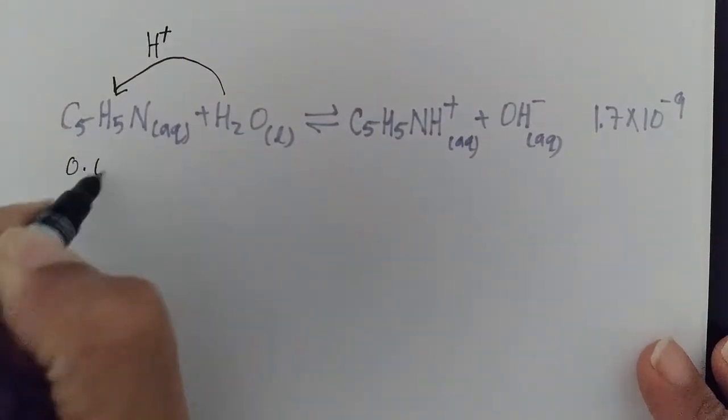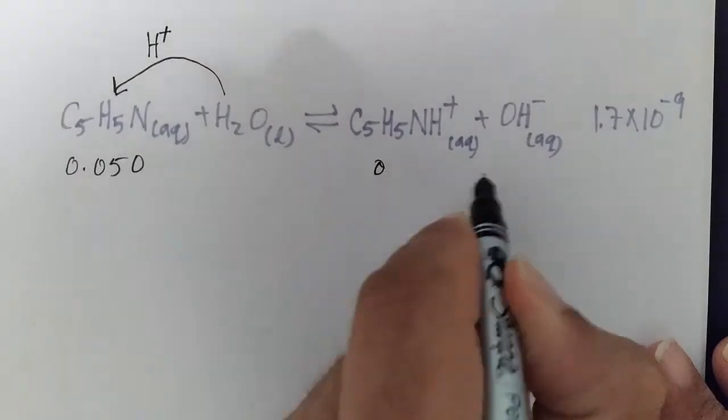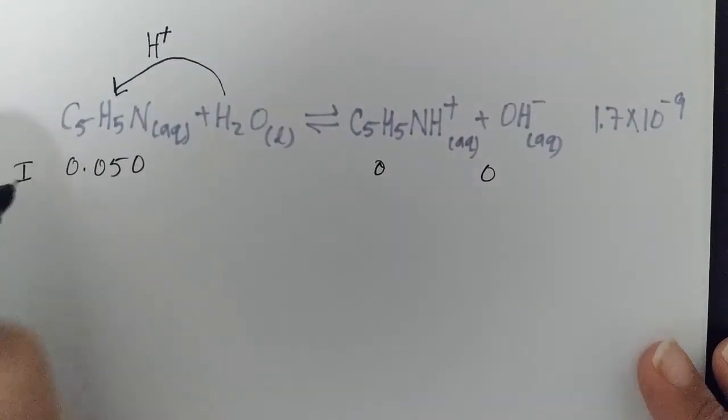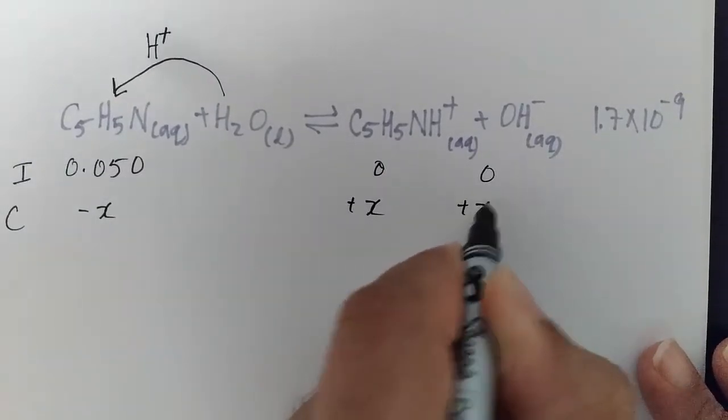They tell us in the problem that our starting concentration is 0.050. So here we have 0 and 0. This is the initial in our ICE table. Our change is going to be minus X, plus X, and plus X.